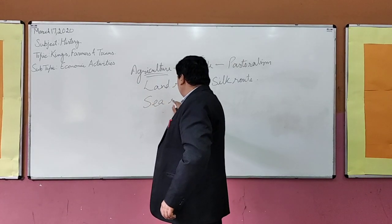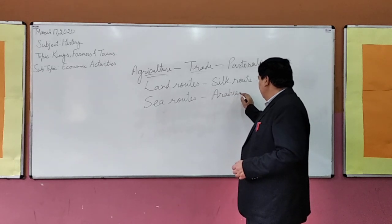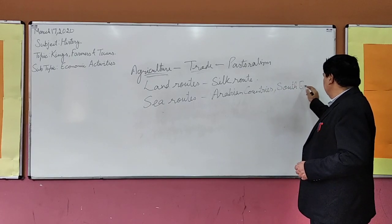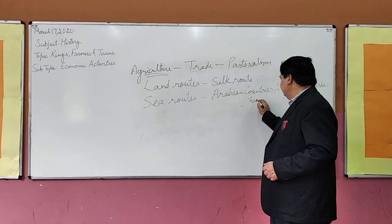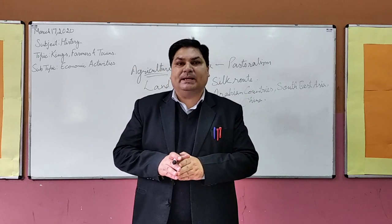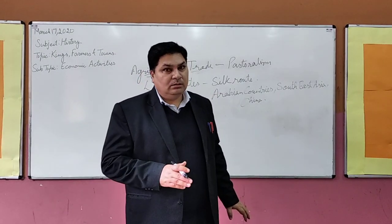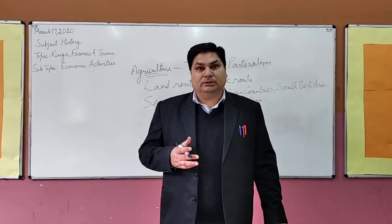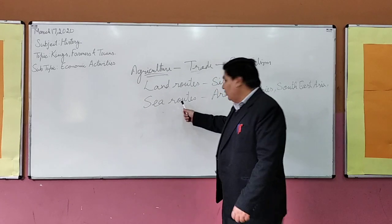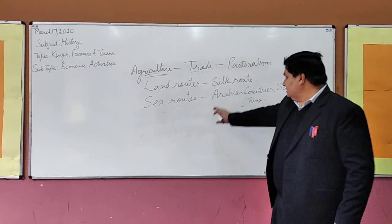Second were the sea routes. Sea routes connected India to European countries, South Asian countries, and of course China. Remember, the five major administrative centers of the Mauryan Empire were on either the Silk Route or the sea routes. For example, Taxila, Ujjain, and Pataliputra — all three were on the Silk Route, that is the land route through which trade was carried out — while Kalinga was a major commercial area connected by sea.